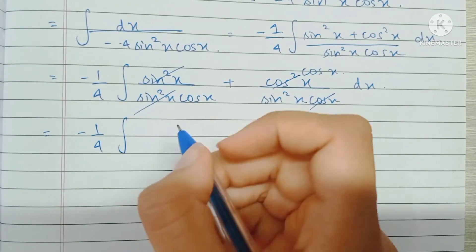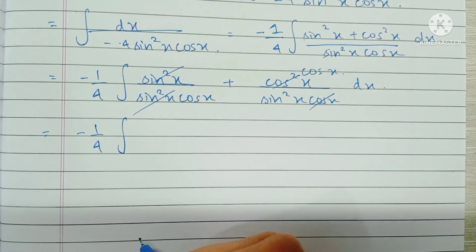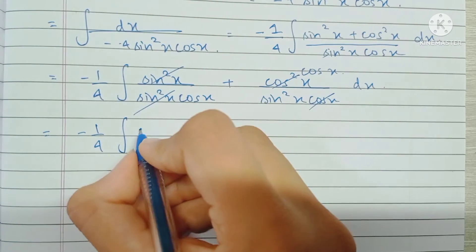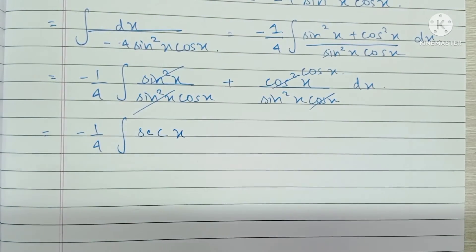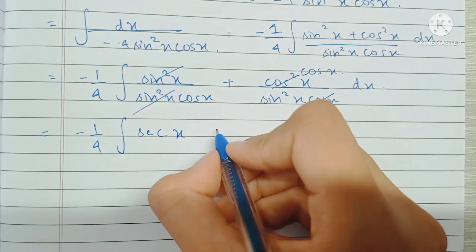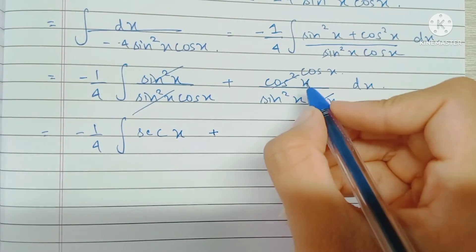I can write that as secant x, since they're reciprocals of each other. Then we have plus, and I can write cos by sine squared as cos x by sine x into 1 by sine x.